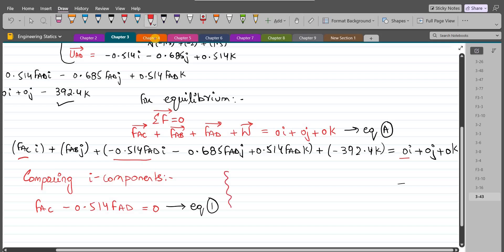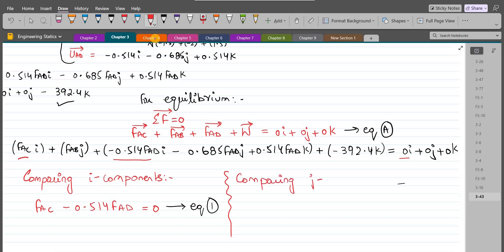Now comparing the J components, we have FAB